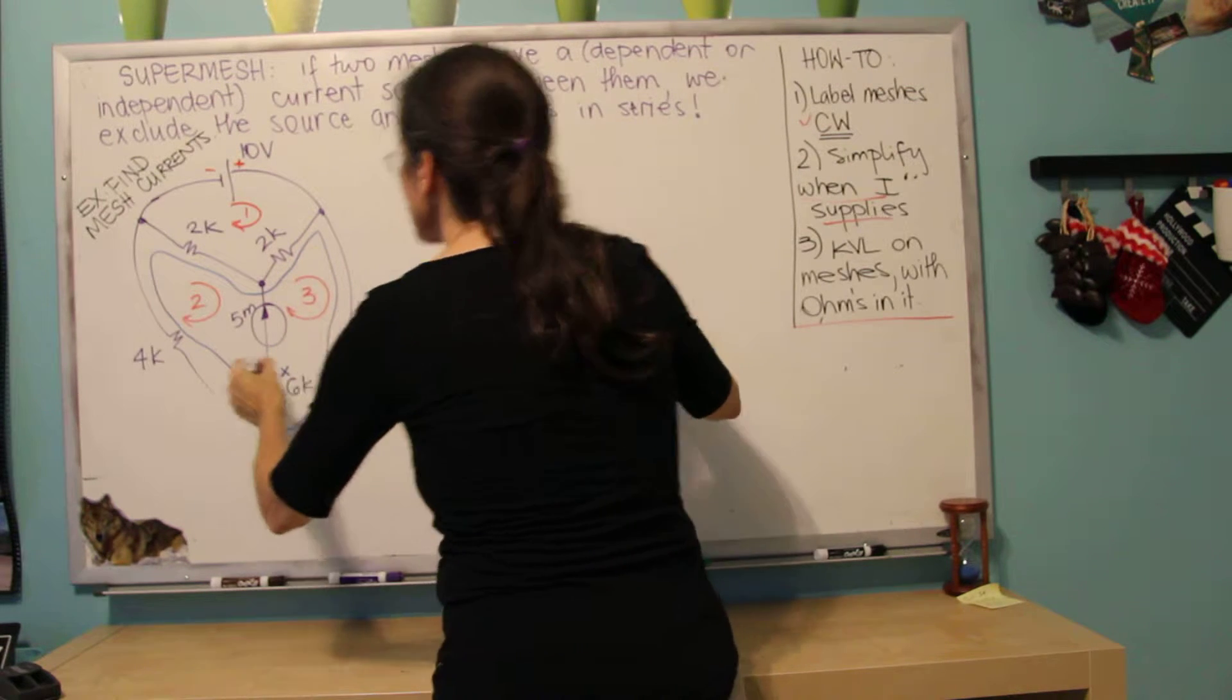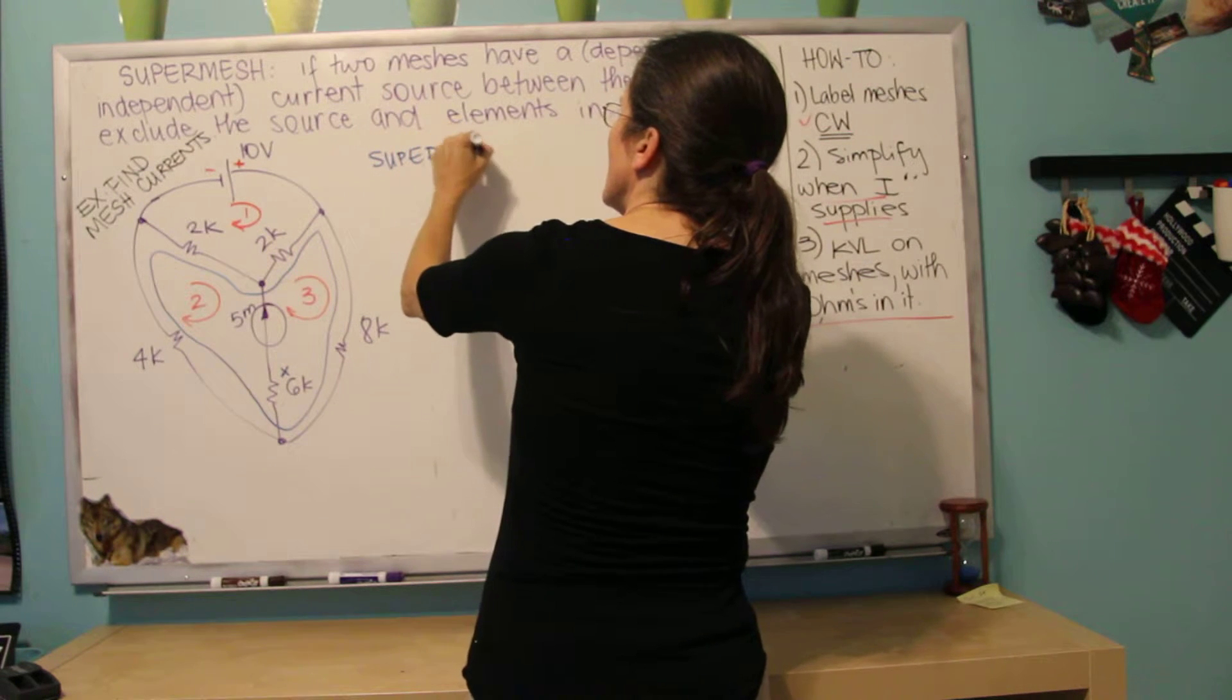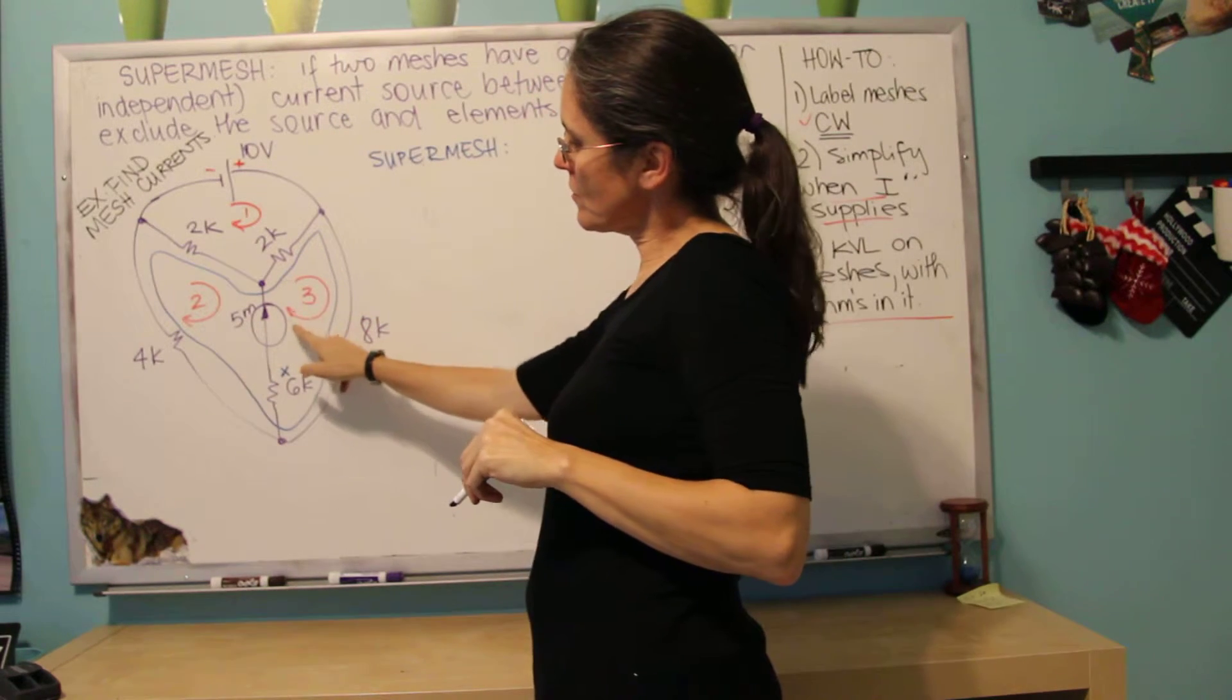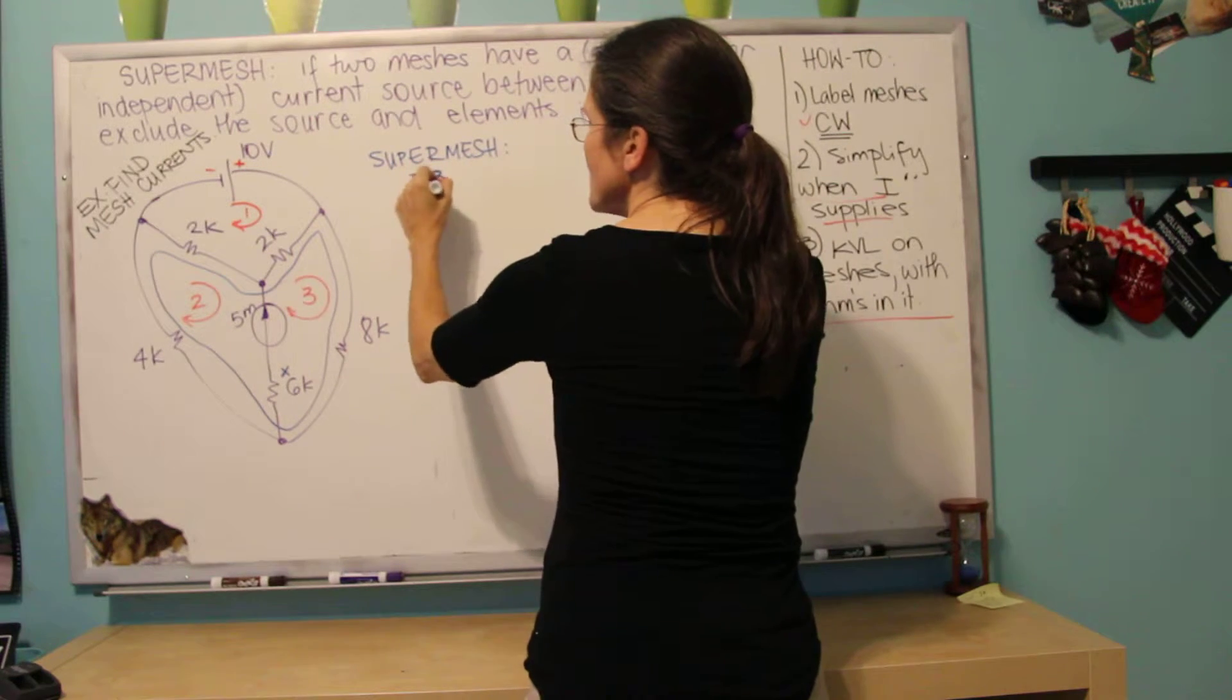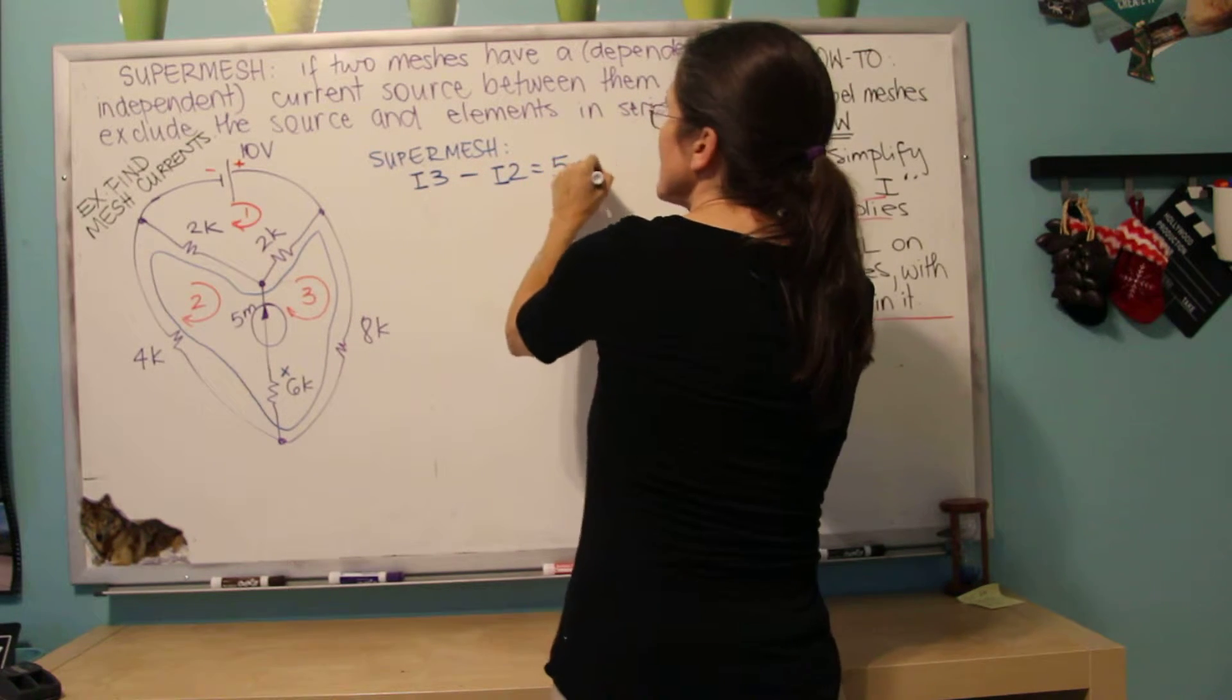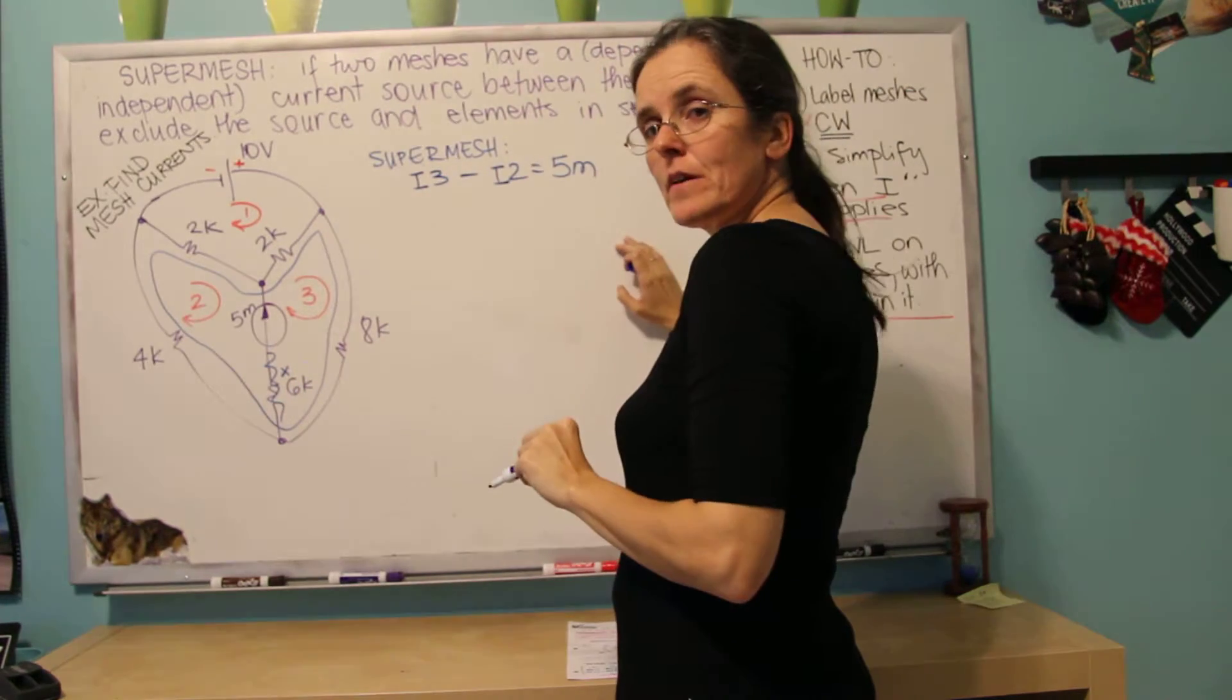Just like in super nodes, I'm going to write the super mesh equation by looking at the connection between the third and the second meshes. So I see that the third is going the same direction as the five millis. So I'm going to call the current three minus the current two equal to the five milliamps that's connecting the two of them. And then I'm not going to consider this when I do my KVL.